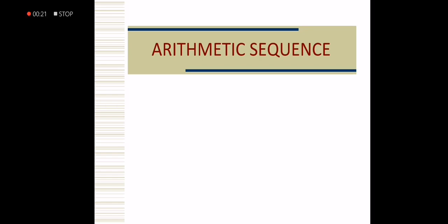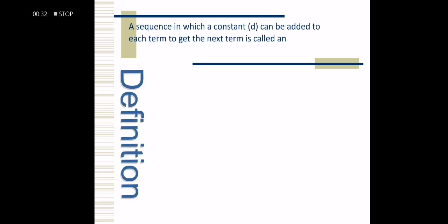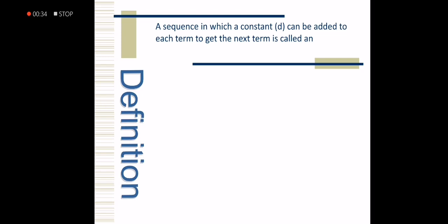So I divided this topic in many parts so that you will be able to grasp clearly the lesson. As an introduction to arithmetic sequence, by definition, a sequence in which a constant d can be added to each term to get the next term is called an arithmetic sequence. The constant d is called the common difference.